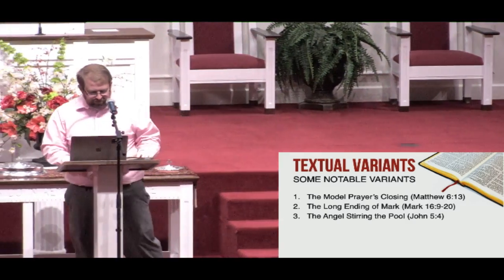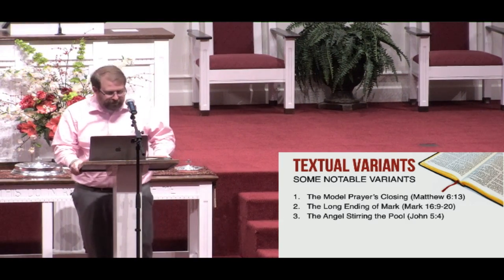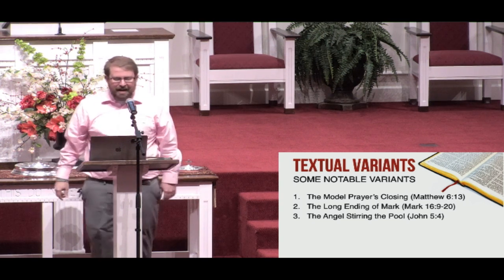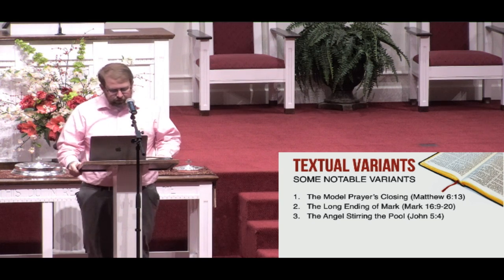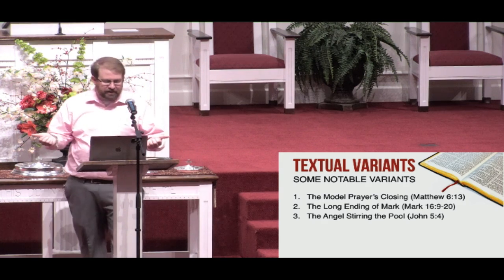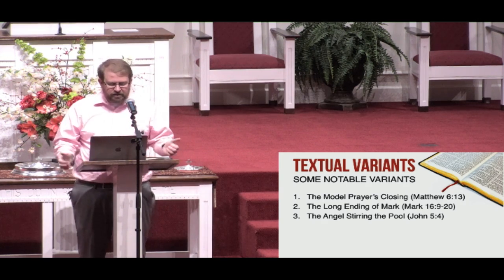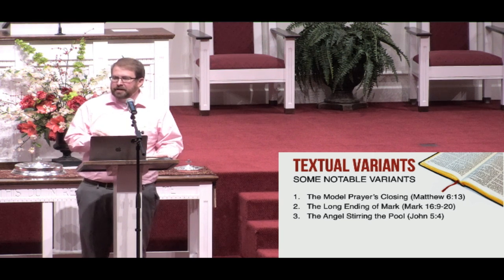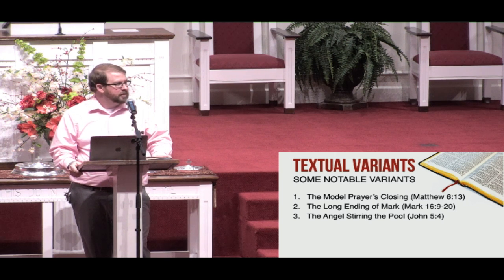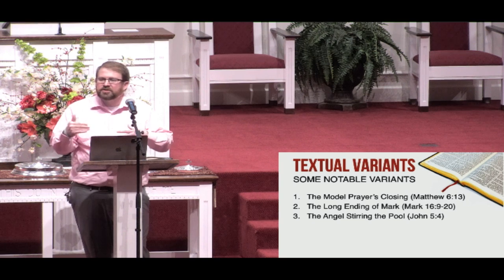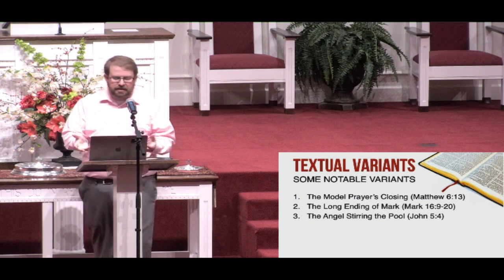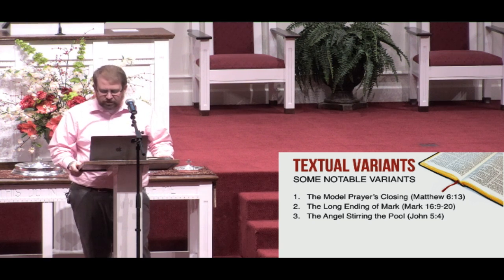What's going on with John chapter 5 verses 3 and 4? The words in the New King James Version are not found in the earliest and best manuscripts available. Specifically, you won't find this in Codex Sinaiticus, Codex Vaticanus, or Codex Bezae. It is present in Codex Alexandrinus and about 20 other manuscripts, some of which place an asterisk next to this passage — an indication that the scribe believed this section to be suspect.